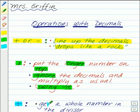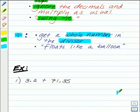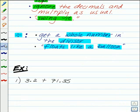With dividing, you want to get a whole number in the divisor by moving the decimal, and then your decimal will float like a balloon. Let's take a look at some examples, and you'll understand this a little better.